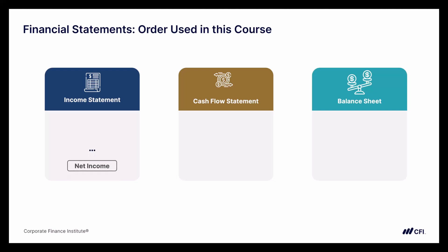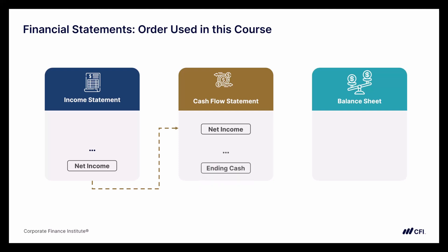The bottom of the income statement — the bottom line — is net income. At the top of the cash flow statement is also net income, so by putting the statements in this order we get a nice flow from the income statement over to the cash flow statement. At the bottom of the cash flow statement you find a summary with the ending cash balance. Transitioning that over to the balance sheet, the balance sheet also starts with a cash line, and since the balance sheet always reports ending balances, the ending cash flows nicely from the cash flow statement to the top of the balance sheet.